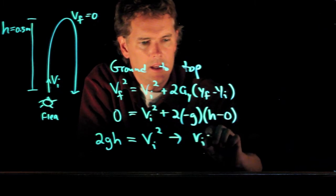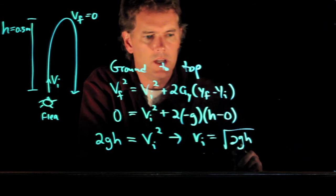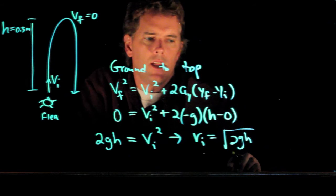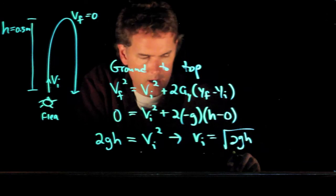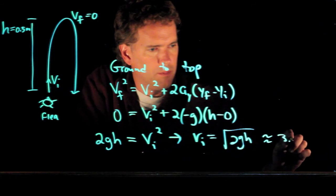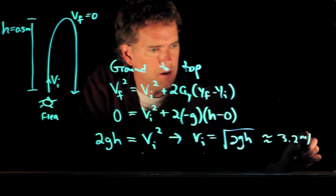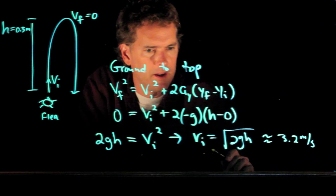So VI equals the square root of 2GH. And if we plug in our numbers, you should get a V of around 3.2 meters per second. 3.1 or 3.2 meters per second.